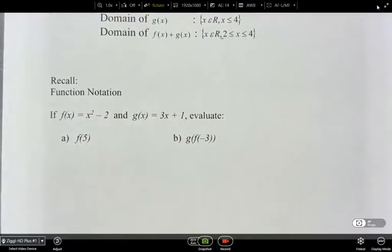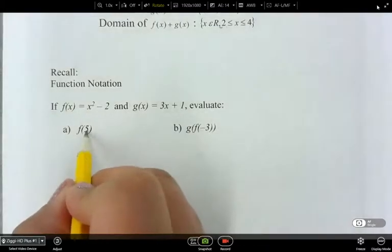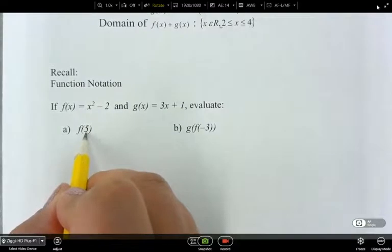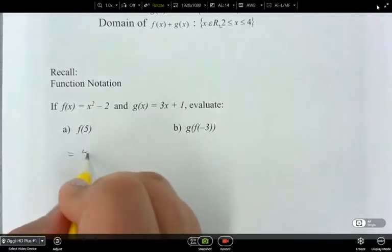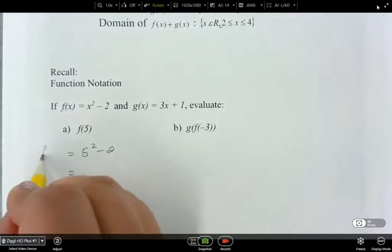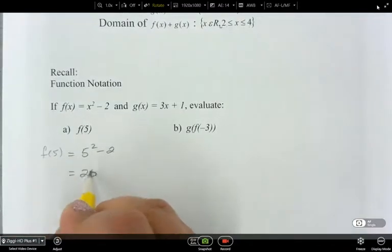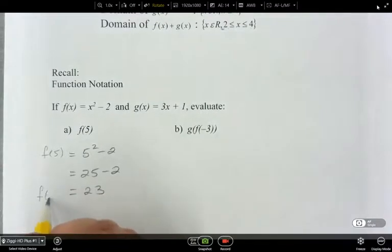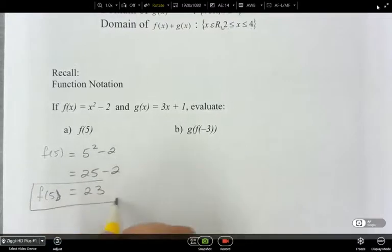So, just to recall for function notation here, if f of x is x squared minus two and g of x is three x plus one, so evaluate. So, we did some of this a little bit in grade 10. We started introducing it to grade 11. We did a little more, and now we're kind of doing a lot of it, right? Just in using function notation. So, what you do basically is take your, normally we have an x here, right? But this is telling you to replace five instead of the x. So, five squared minus two. So, f of five equals 23.